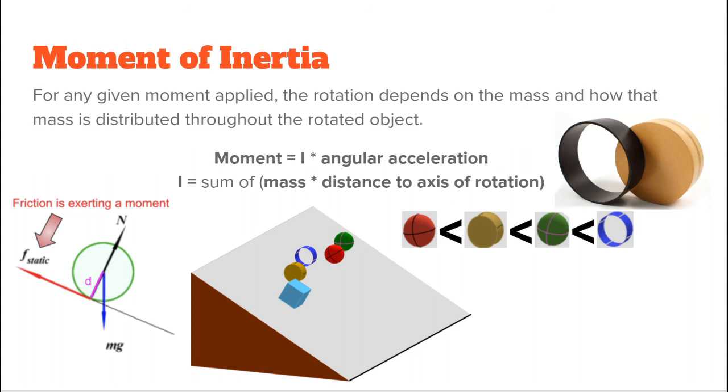These objects rotate and roll as they move down the ramp because of the frictional force exerting a moment on the object, illustrated on the diagram on the left. Even though all of these objects have the same mass, the same frictional force, and thus the same moment, the solid sphere reaches the bottom of the ramp first because it is able to increase its rotation more due to its smaller moment of inertia.